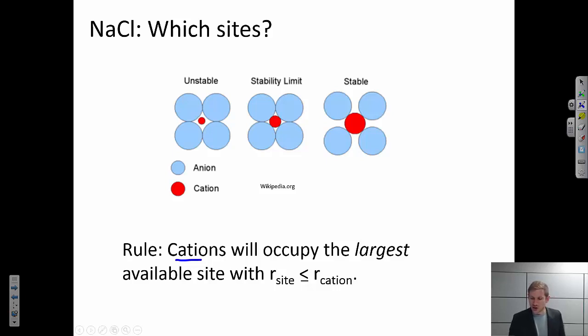So if I picture four anions here, so these are negatively charged, if the cation is smaller than the available site, so the site is out here, the cation is smaller than that. That's an unstable configuration. It's unstable because we have this repulsive force. Those anions want to spread away from each other. They're being repelled from each other. So if we have a very small cation, this is an unstable configuration.